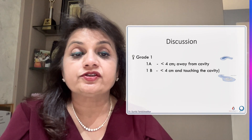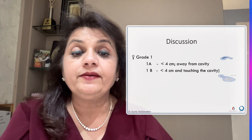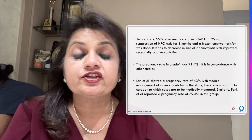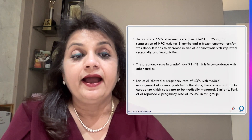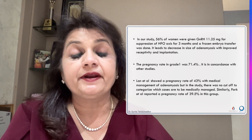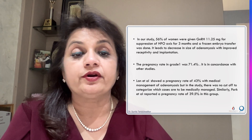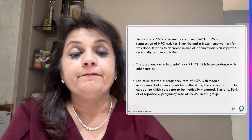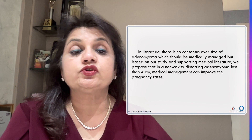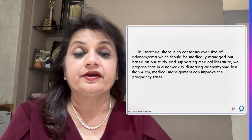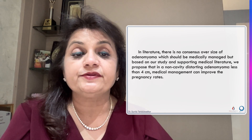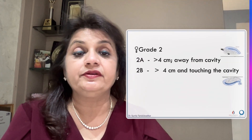Grade 1 adenomyosis — less than 4 cm, away from the cavity (1A) or touching the cavity (1B). In our study, 56% of women were given GnRH for suppression of the HPO axis for 3 months, followed by frozen embryo transfer. This led to a decrease in adenomyosis size with improved receptivity and implantation. The pregnancy rate was 71%. Lance et al. also showed a pregnancy rate of 43% with medical management of adenomyosis, though their study had no cut-off to categorize which cases were managed medically. Based on our study and supporting literature, we propose that non-cavity-distorting adenomyoma less than 4 cm can have better results with medical treatment.